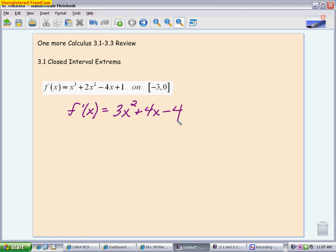Next, I want to figure out when this derivative equals 0. You can either use the quadratic formula program in your calculator, or you can see if it factors. This one does factor really nicely. It factors 3x minus 2 times x plus 2. So our critical values are x equals 2 thirds and x equals negative 2.